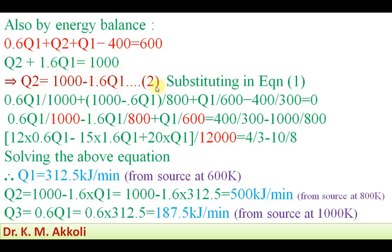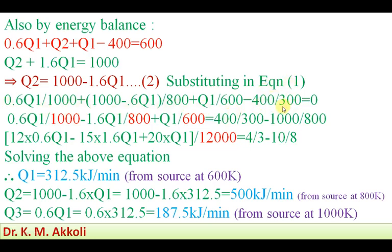Substituting equation 2 into equation 1: 0.6 Q1 / 1000 + (1000 − 1.6 Q1) / 800 + Q1 / 600 − 400 / 300 = 0. We rearrange, moving the constant terms to the right-hand side: 0.6 Q1 / 1000 − 1.6 Q1 / 800 + Q1 / 600 = 400 / 300 − 1000 / 800. Taking LCM of the denominators 1000, 800, and 600, which is 12000.